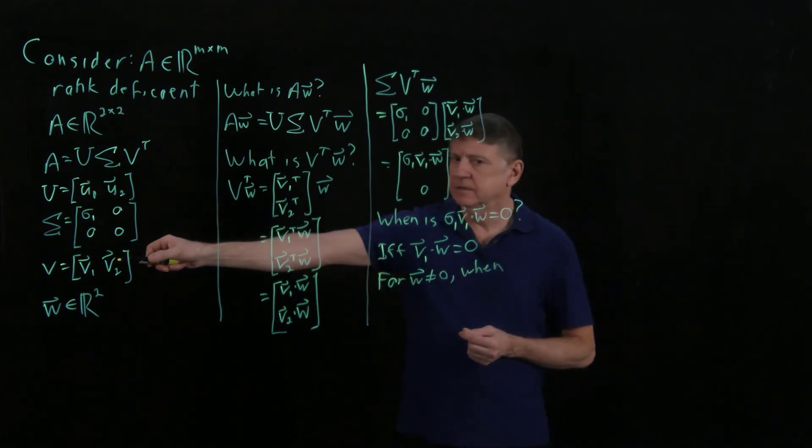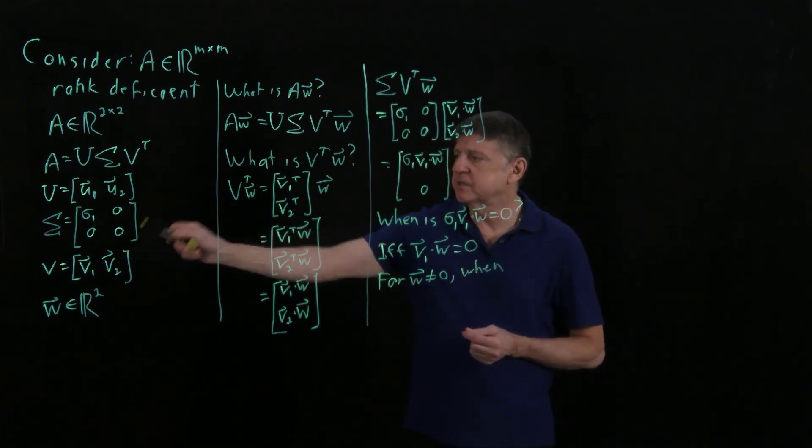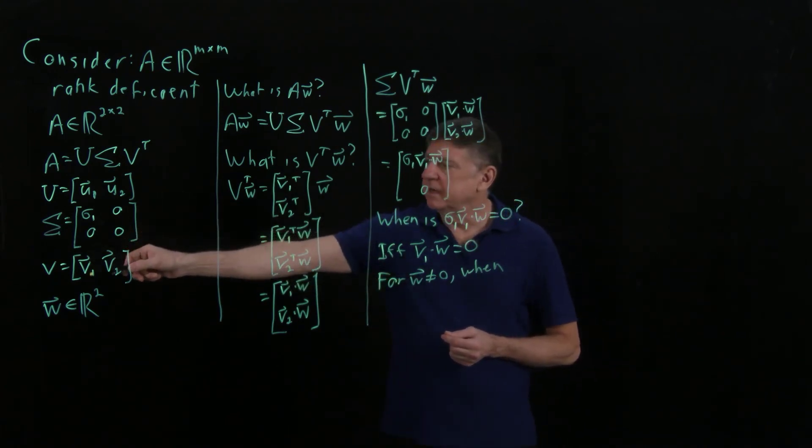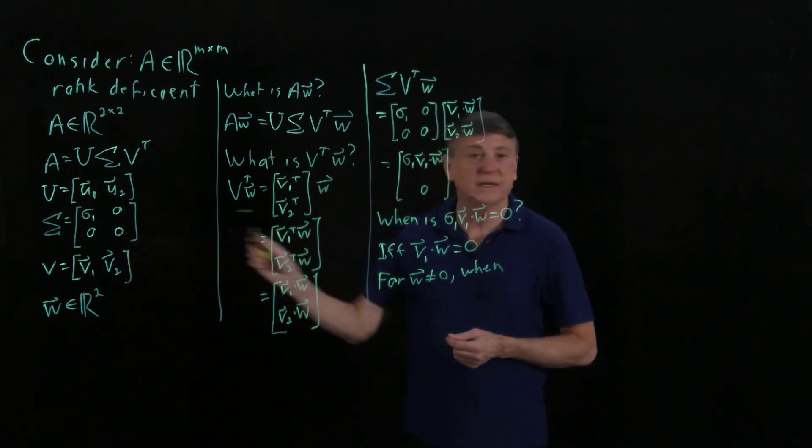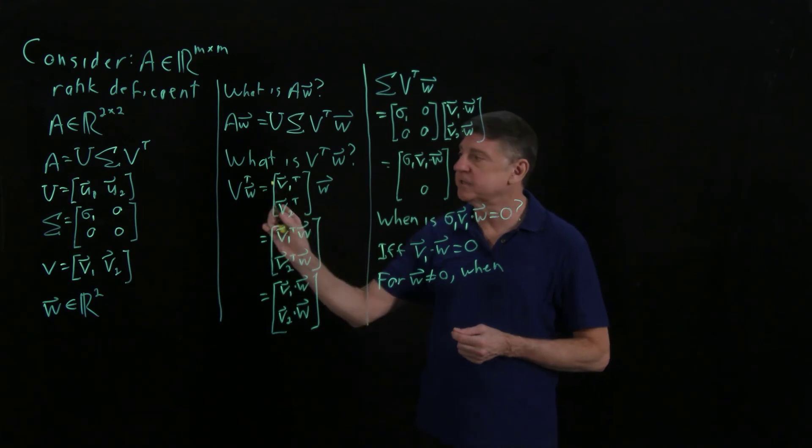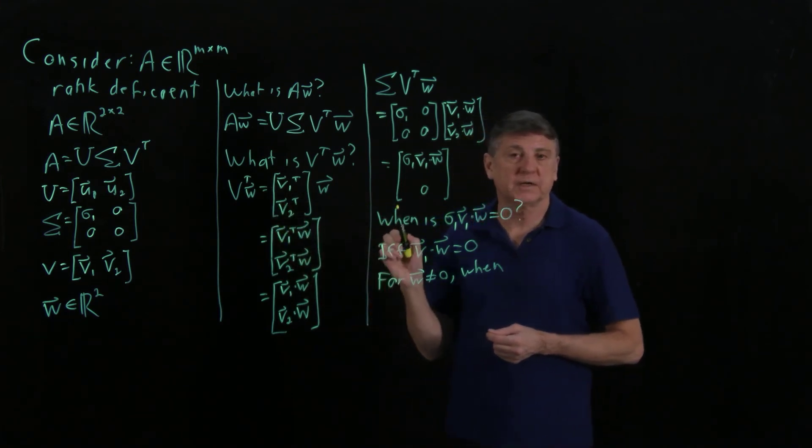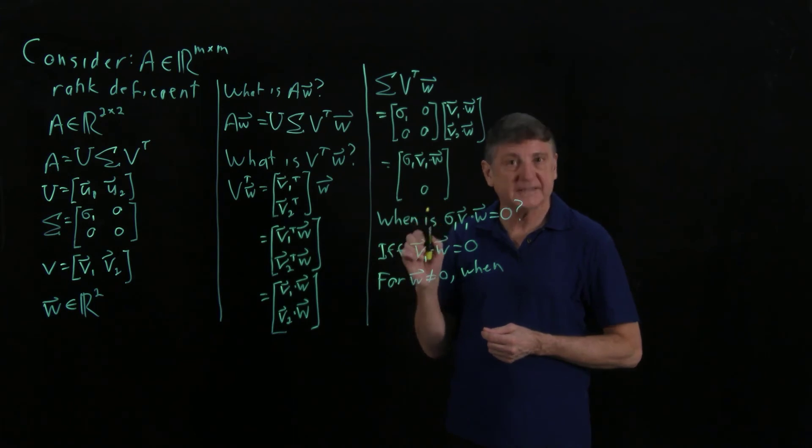Well, let's go back to the V matrix. V1 is a column of an orthogonal matrix. V2 is a column of an orthogonal matrix. What's the dot product of the columns of an orthogonal matrix? That's 0.